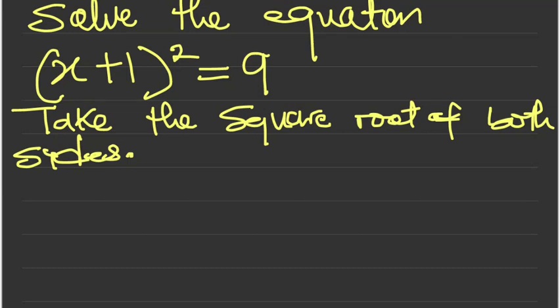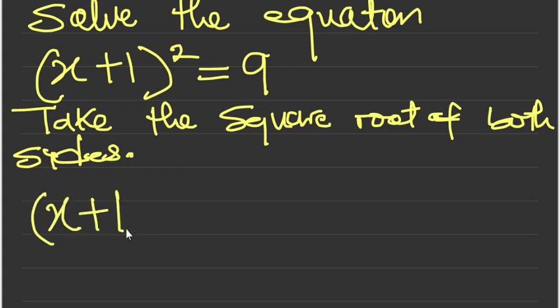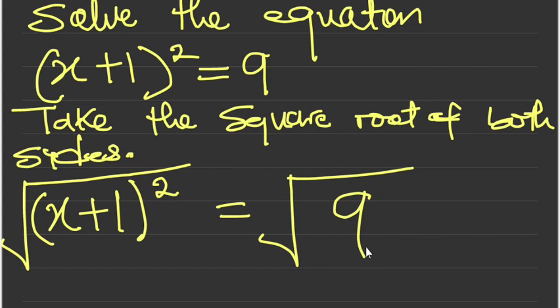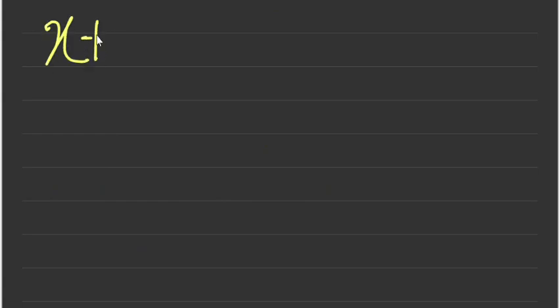Solve the equation (x + 1) squared is equal to 9. To solve this equation, the first step is to take the square root of both sides. Taking the square root of both sides gives you the square root of (x + 1) squared, which equals the square root of 9, giving plus or minus.